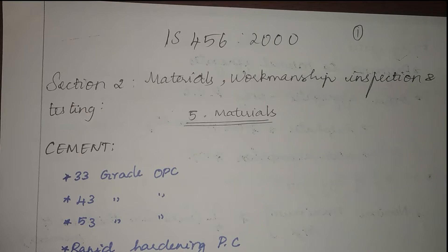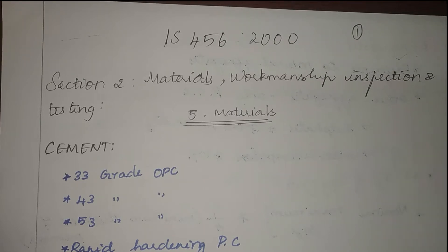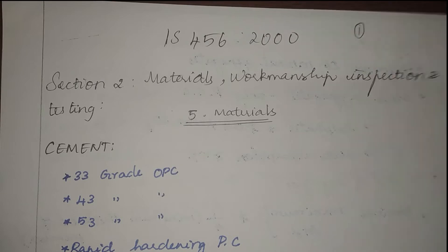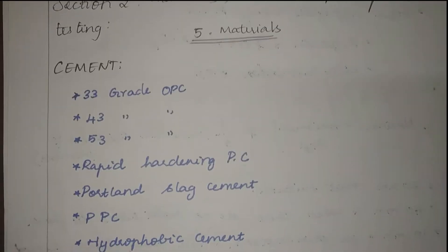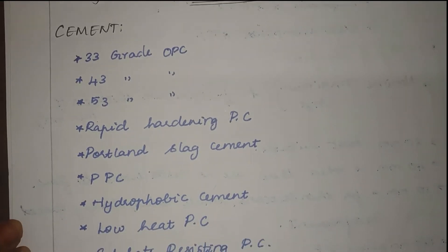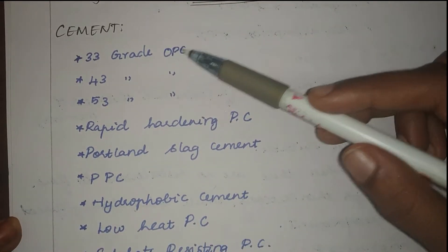IS456 2000 is a very important material which you have to learn if you're planning to crack any government jobs, GATE, or if you're planning to attend any interviews, because this is the basic material every civil engineer should know. In this video we're going to see Chapter 5, which is about materials. The first material we're going to see is cement.